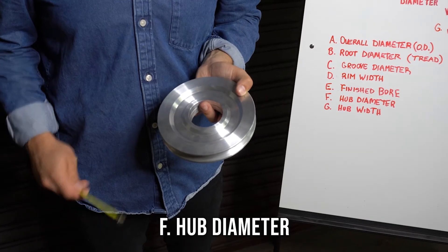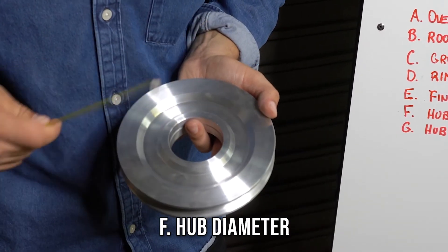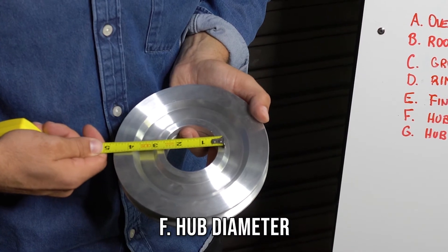Next we have the hub diameter. That is from this ridge to this ridge. This one is two and three quarters.